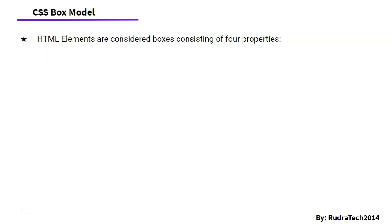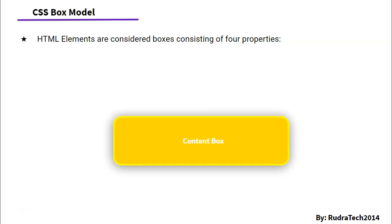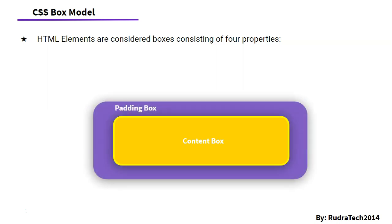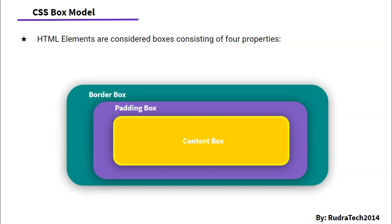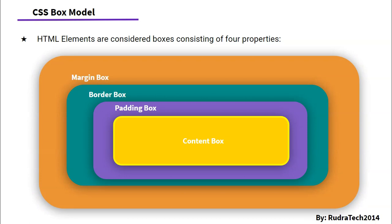The HTML elements are considered as boxes consisting of four properties. Whenever our browser is rendering an HTML element, it divides the HTML element into four boxes. The first and innermost box is the content box, which consists of our text, HTML elements and images. Then the next box is the padding box, generated due to the padding property of the HTML element. Then is the border box, generated due to the border property. And the last one is the margin box, which is generated due to the margin property of the HTML element.